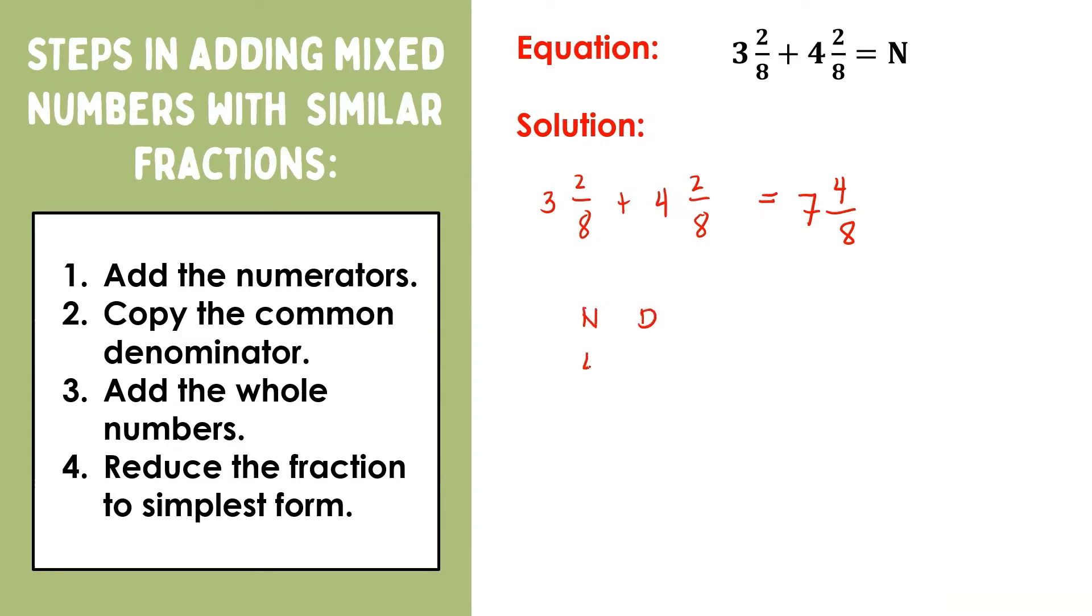Now let us simplify our fraction. Let us write first the numerator, then the denominator. 4 and 8 are both divisible by 2. That is, 4 ÷ 2 = 2, and 8 ÷ 2 = 4. 2 and 4 still have a common factor other than 1, and that is 2.